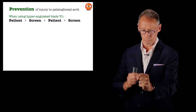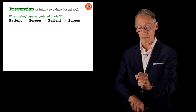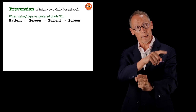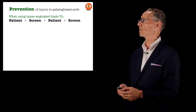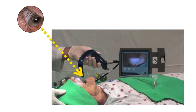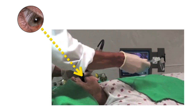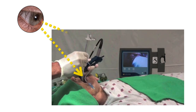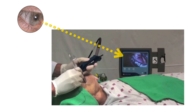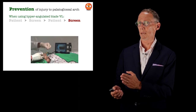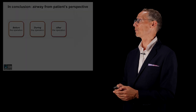It is also extremely important to look back directly into the patient's mouth until the tip of your styletted tube is past the palatoglossal arch, and only then look back at the screen to guide the tube to the larynx and down the trachea. This four-step approach: look in the mouth during initial blade placement, look at screen to complete laryngoscopy, look back at the mouth until the tube tip is past the palatoglossal arch, then look at the screen to navigate to the larynx — almost never should you inadvertently put a tube through the palatoglossal arch.